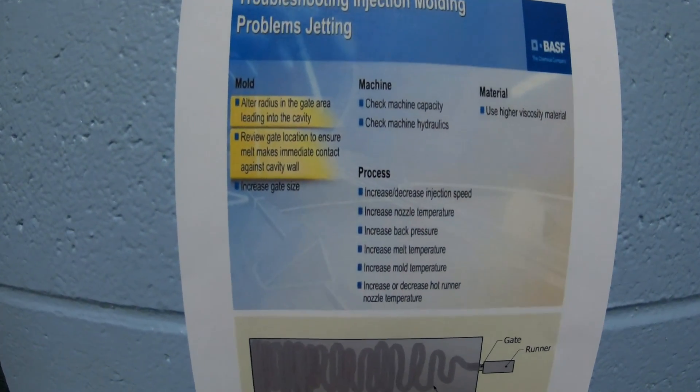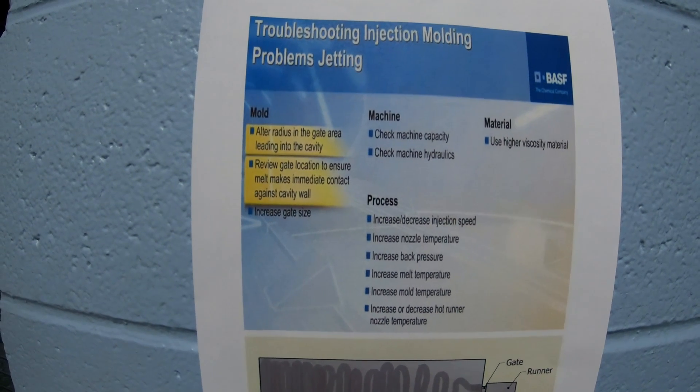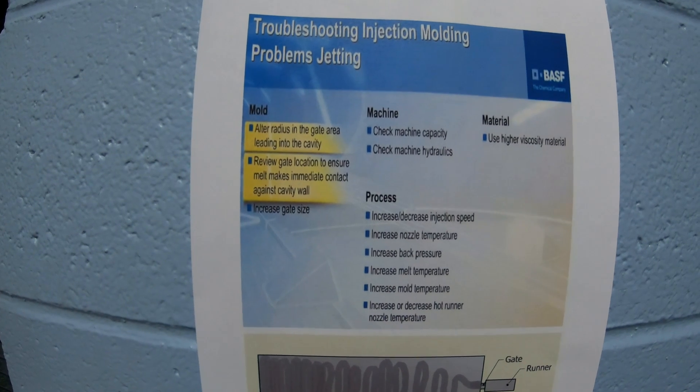Now I'm going to show you some troubleshooting techniques on how to fix a jetting issue. All the information I pull up is confirmed through material suppliers, troubleshooting books — sources like Ashland Chemical and BASF — to get as much background as possible before trying to fix something. On the mold side: alternate radius in the gate area leading to the cavity, review gate location to ensure melt makes immediate contact against the cavity walls, or increase gate size.